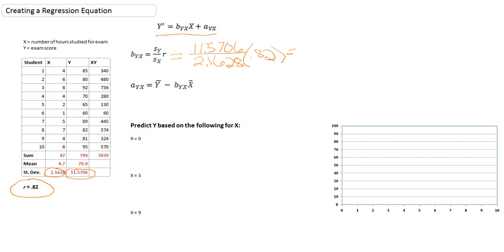First, we will divide 11.5706 by 2.1628. And that number is 5.3498. And then multiply that by 0.82, the Pearson's r. Once we multiply this out, our final number is 4.39. This is our slope for our equation.